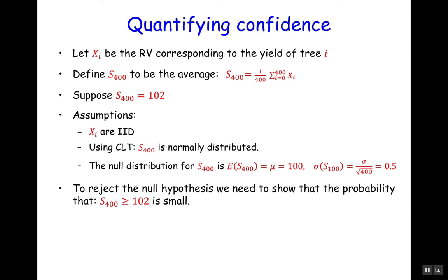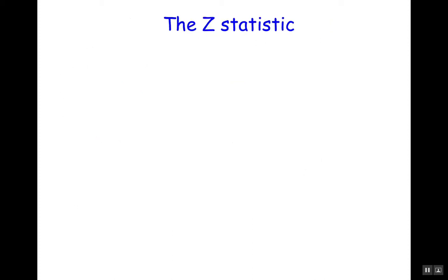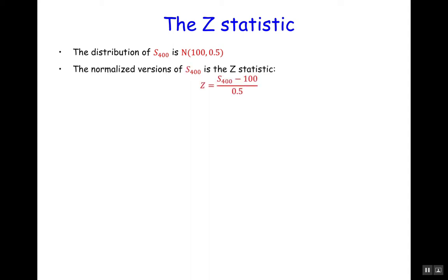So what we want is to reject the null hypothesis. We need to show that the probability of getting a number like 102 or larger is very, very small. So we do that by using the z-statistic. The distribution of S400 is a normal distribution with mean 100 and standard deviation 0.5. We can normalize this distribution to have mean 0 and standard deviation 1 by subtracting the mean and dividing by the standard deviation.